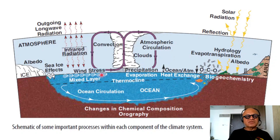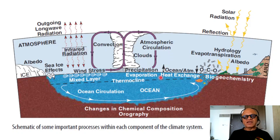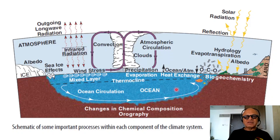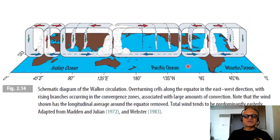The ocean has the surface mixed layer where you have heating, cooling, wind stress forcing, evaporation and precipitation also affected, and heating and cooling. Of course, you have biogeochemistry and the thermohaline circulation, so changes in chemical composition and orography and so on.